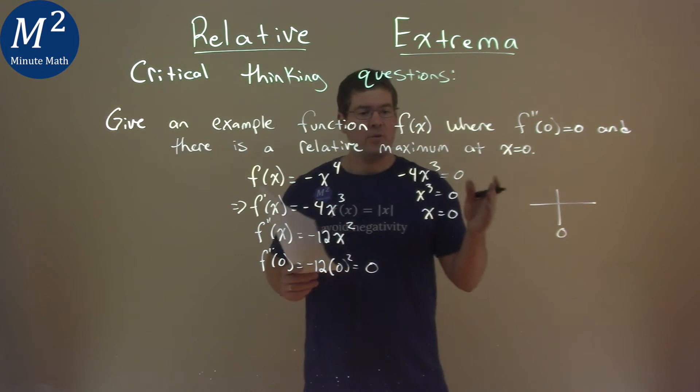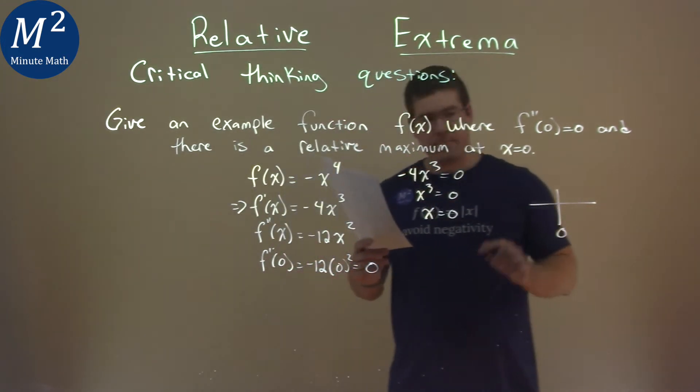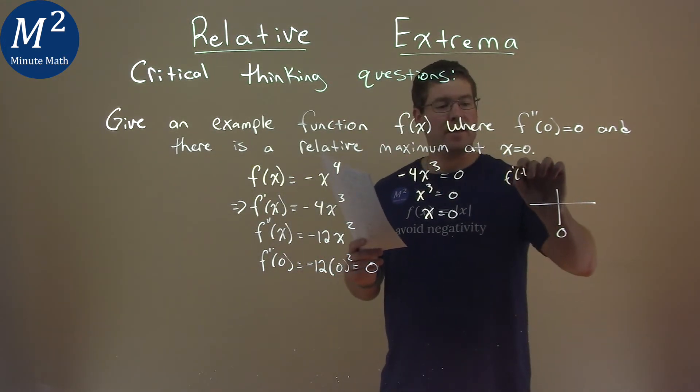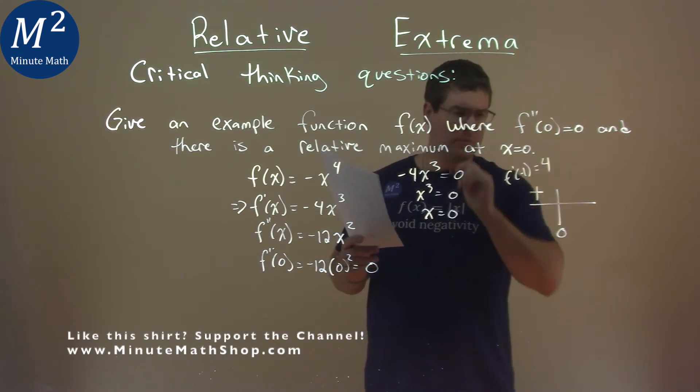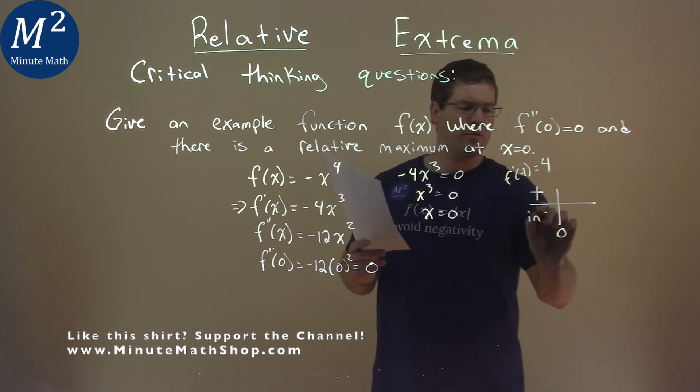We have zero there, we're plugging values into our first derivative there, and I found f'(-1), that was less than zero, and I got 4, and that means, excuse me, I just care that it's positive, and that means we're increasing.